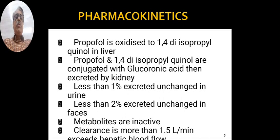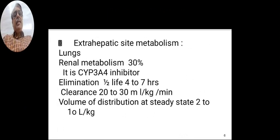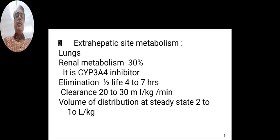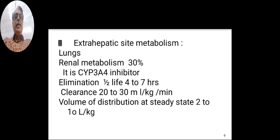The clearance is more than 1.5 liters per minute, which means it exceeds hepatic blood flow. There is an extra-hepatic site of metabolism in the lungs, and renal metabolism accounts for 30%. It is a CYP3A4 inhibitor. The elimination half-life is 4-7 hours, clearance is 20-30 ml per kg per minute, and volume of distribution at steady state is 2-10 liters per kg.